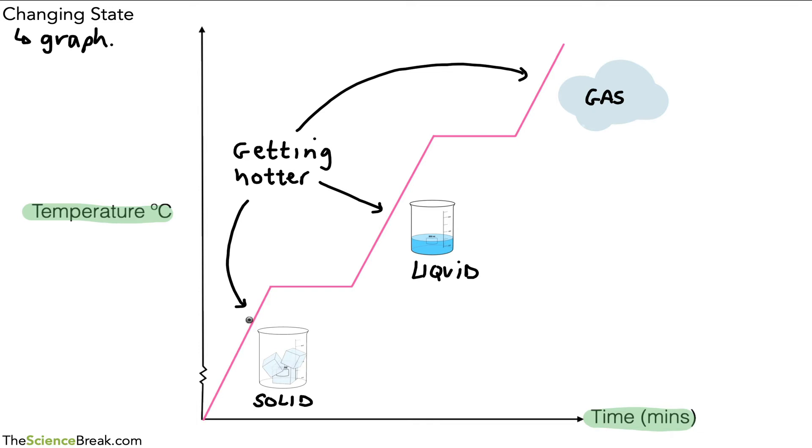However, at the flat parts, there's not nothing happening. The flat parts is where, for example, the ice will start melting into a liquid and the liquid will start boiling to make a gas. So the flat parts are where we get the changes of state, either melting or boiling based on the graph we're looking at here.